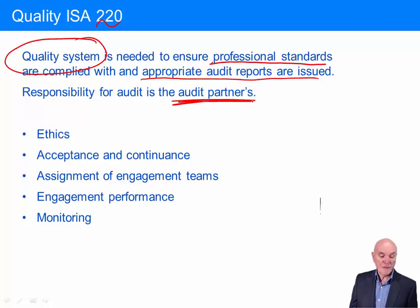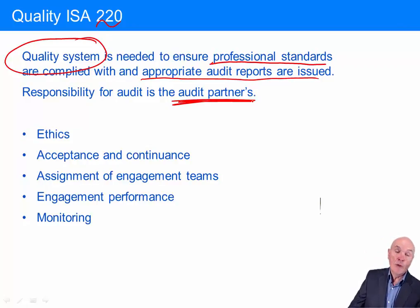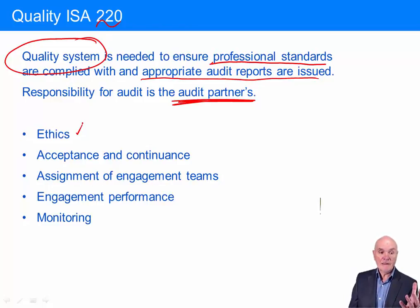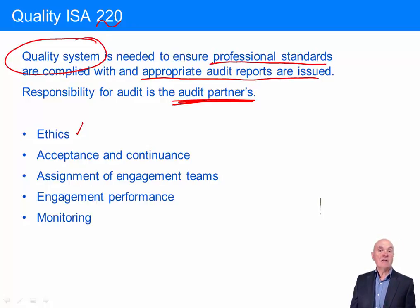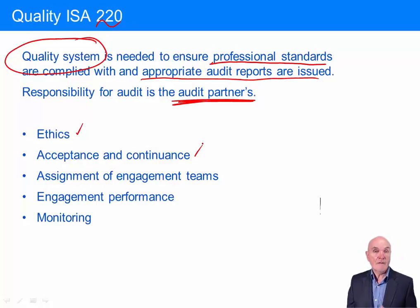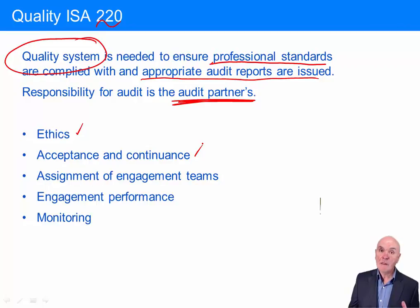The areas we'll be looking at are almost like going through the whole business of getting and performing an audit. Before we say yes to an audit, we have to make sure that the ethics are okay — that the partner isn't auditing a company where the finance director is their sister or brother, or there are no familiarity type threats. We need a system that gives us confidence that ethical standards are sufficiently high. We also have to look at acceptance and continuance — every year checking whether it's okay to keep auditing a company or whether a conflict of interest has come in.